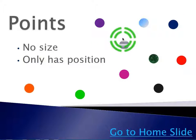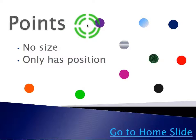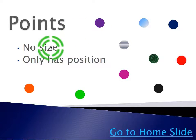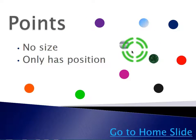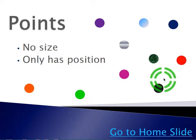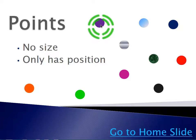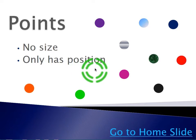The first type of geometry we are going to discuss is points. It is important to note that points have no size and they only show position. These here are some examples of points, and I'm sure you've seen points on graphs in your other math classes. In those graphs, you will notice that they show position on a type of graph.